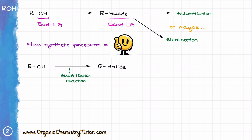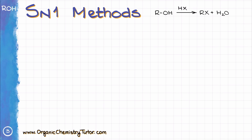Now, when it comes to conversion of alcohols into the corresponding alkyl halides, we'll be looking at some sort of a substitution reaction. As substitution reactions go, we will have either an SN1 reaction or an SN2 reaction style. Let's start by looking at the SN1 reactions first. When alcohols react with hydrogen halides like HCl, HBr, or HI, they typically undergo an SN1 reaction yielding the corresponding alkyl halides as products. For instance, in this reaction, I am reacting 2-methylbutane-2-ol with hydrogen bromide, and we'll make 2-bromo-2-methylbutane as our product.